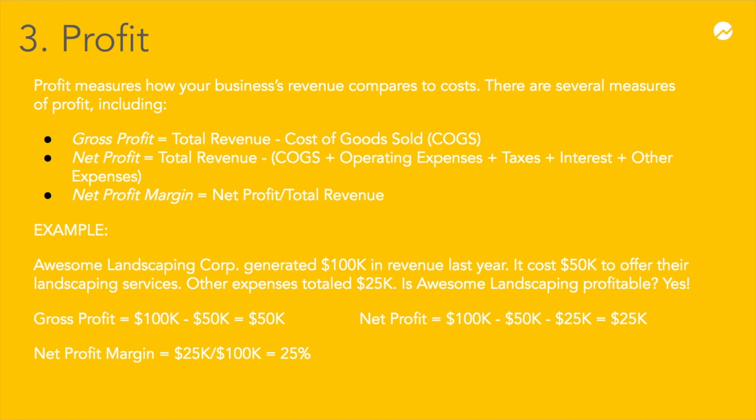The cost of goods sold is simply the expenses associated with producing and selling your goods. More commonly, you might hear the term net profit. Net profit is basically your bottom line—it takes gross profit one step further by subtracting all expenses from your revenue, including cost of goods sold, operating expenses, taxes, and interest. If your net profit is a positive number, your business is in the black or operating at a gain. If your net profit is a negative number, your business is in the red or operating at a loss.